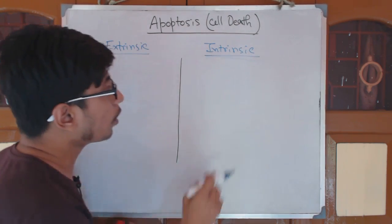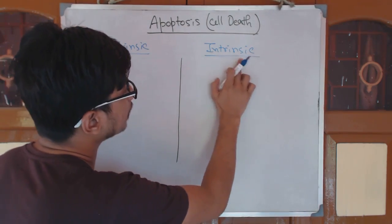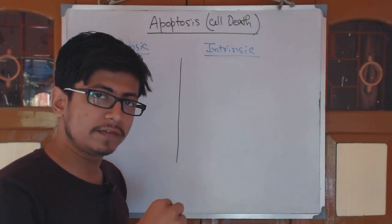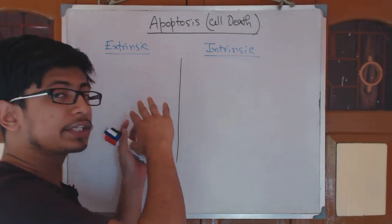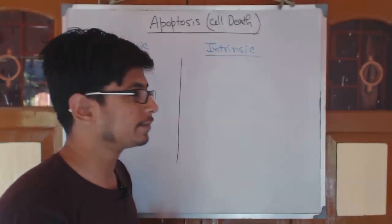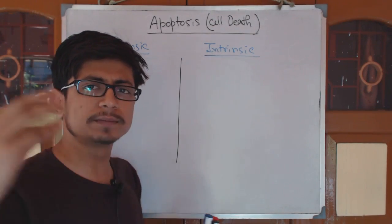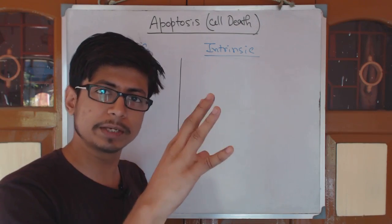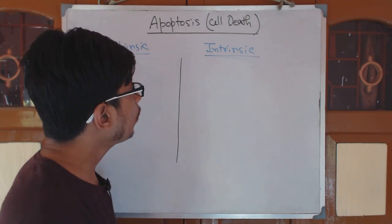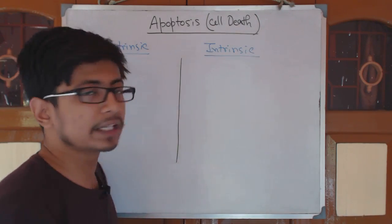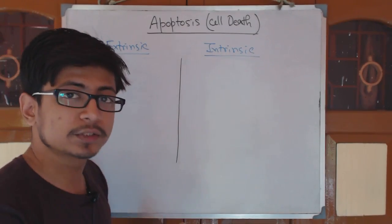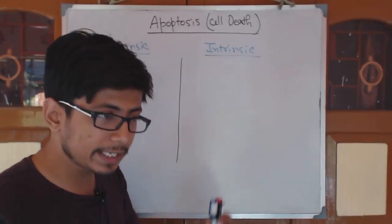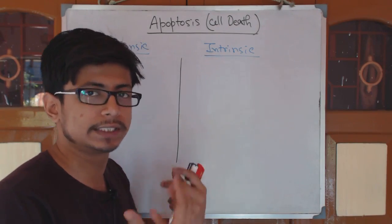The extrinsic pathway means the origination of the pathway is from outside that cell — some signaling molecule will come from outside, attach to a receptor, and then signaling will proceed. The intrinsic pathway means the origination of the pathway is from within the apoptotic cell itself — it starts from inside the cell.